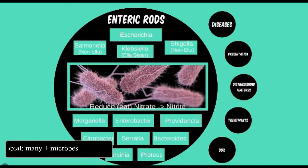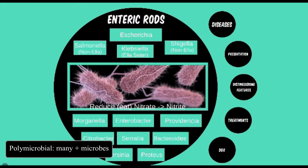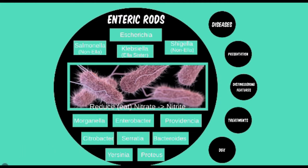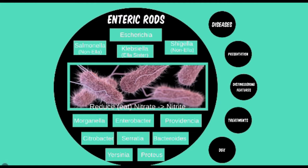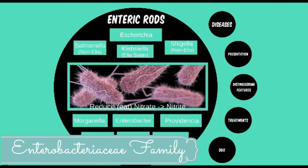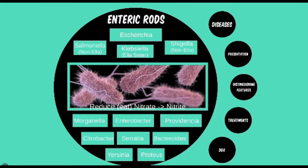We also see a few more Ella sisters, making four if we include Legionella from the last module. The next module will cover the others classified as the Ella sisters. Some of the Enterobacteriaceae family, also known as enteric rods or coliform bacteria, are normal flora in the human gastrointestinal tract.